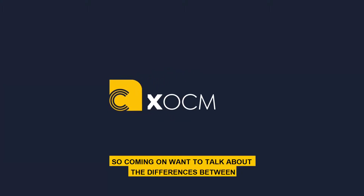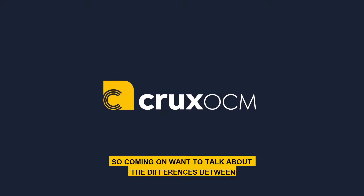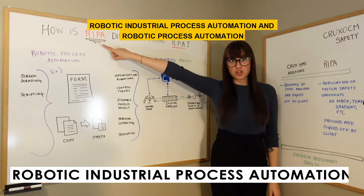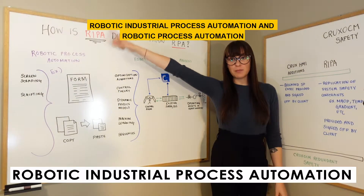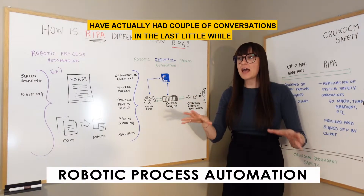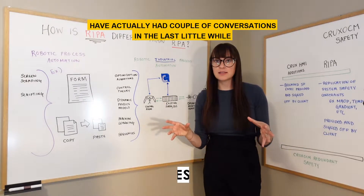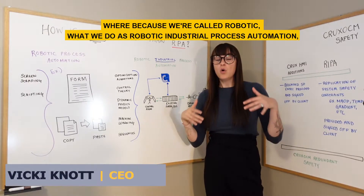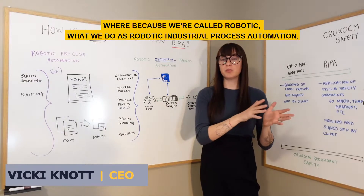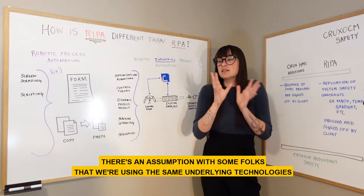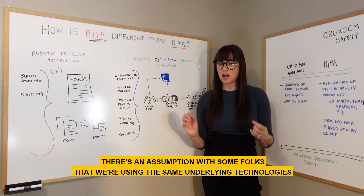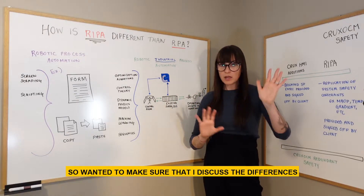I want to talk about the differences between robotic industrial process automation and robotic process automation. I've had a couple of conversations recently where, because we're called 'robotic' and what we do is robotic industrial process automation, there's an assumption with some folks that we're using the same underlying technologies.